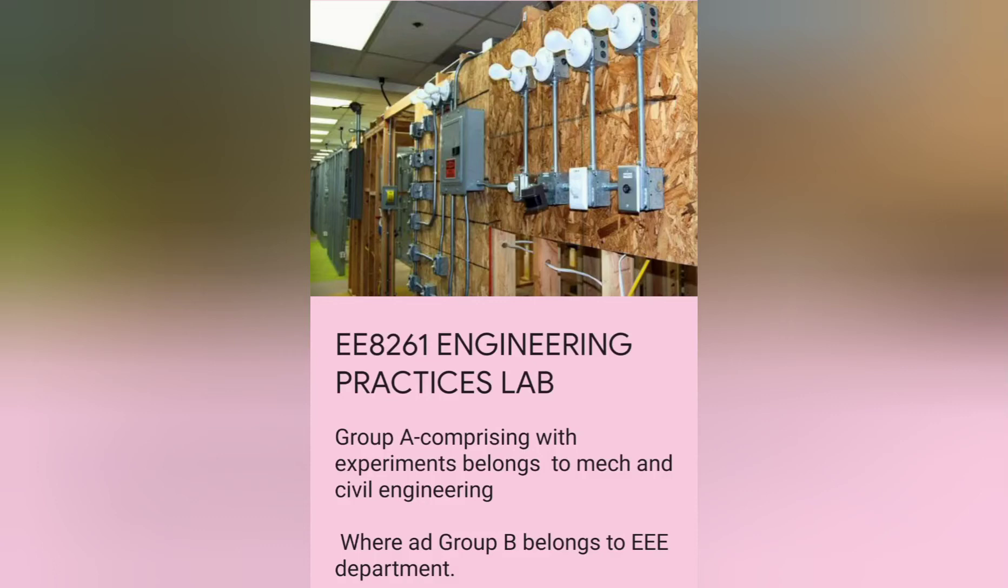Hello students. The subject code and title of the lab we are going to do is EE-8261 Engineering Practices Lab. It consists of two groups, Group A and Group B. Group A belongs to civil and mechanical, whereas Group B belongs to the Electrical and Electronics Engineering department. We are going to do experiments in Group B.